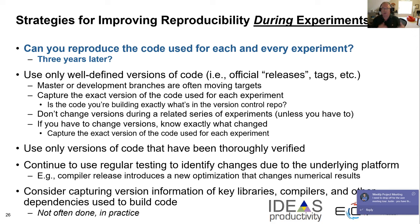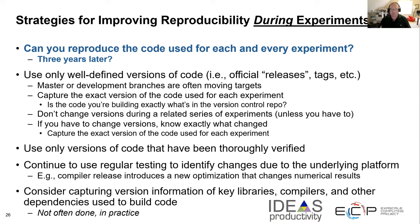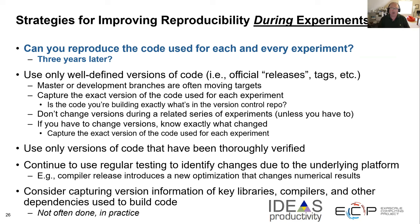Can you reproduce the code you're using for each and every experiment, and can you reproduce it three years later? This gets back to version control. Make sure you use only well-defined versions of your code — don't just pick whatever's in your local copy while you're developing. Make sure you're using an official release or something that's tagged so you can go back and say this is what I used for these runs. And make sure the versions you're using have been thoroughly verified. Even if your code stays fixed over a long series of runs, it's quite possible that some underlying libraries will change due to system updates, so keep some testing going to make sure everything is consistent.